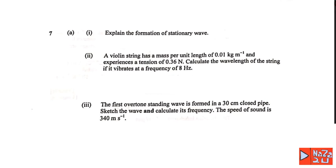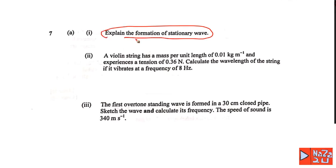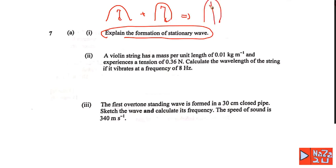Question seven explains the formation of a stationary wave. The superposition of two waves — wave one and wave two — produces a double amplitude. If each wave has amplitude A, the superposition gives amplitude 2A. This is the formation between the two waves.